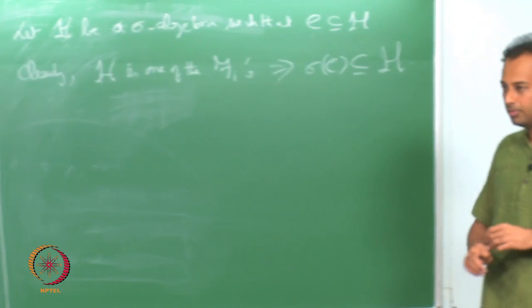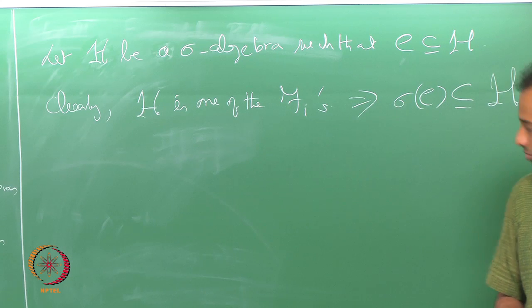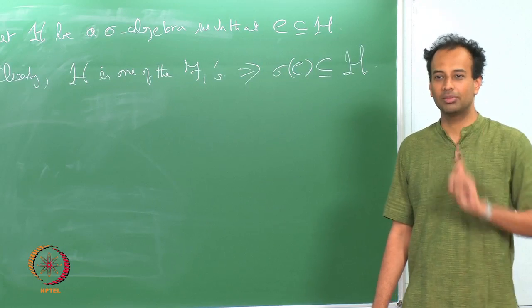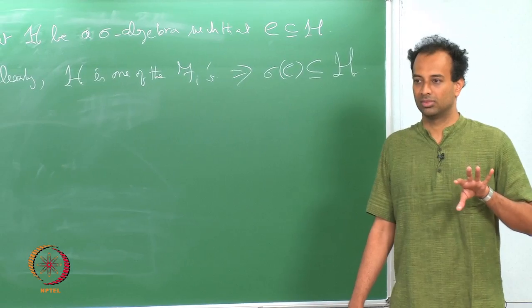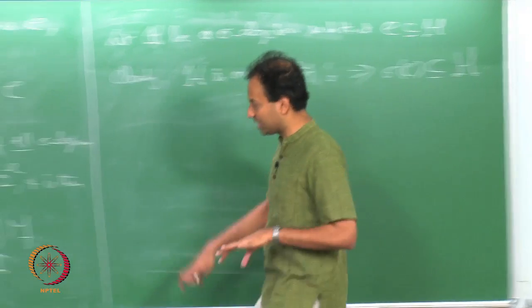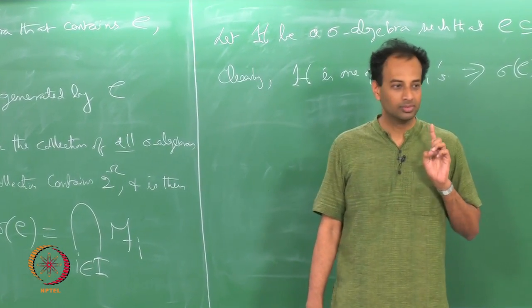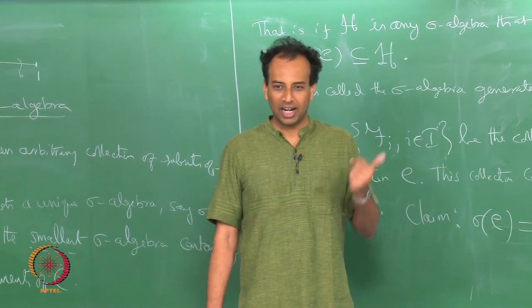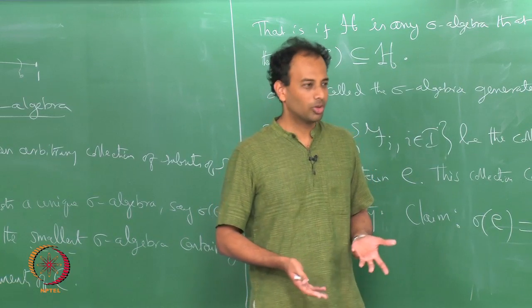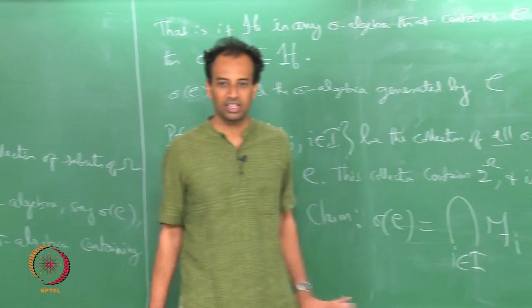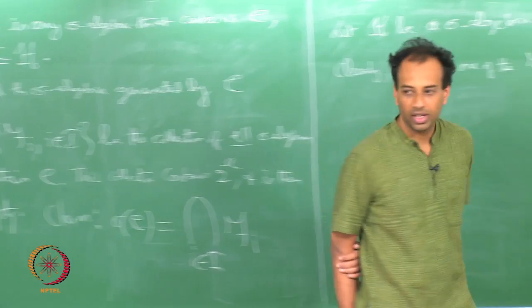Since H is one of the F_i's, this implies that sigma(C) is contained in H, because sigma(C) is the intersection of all these F_i's but one of these F_i's is in fact H. So you are done. Given any collection of subsets of omega you can find the smallest sigma algebra that contains this collection. The smallest sigma algebra could be 2^omega itself or could be some smaller sigma algebra, but it is definitely well defined.